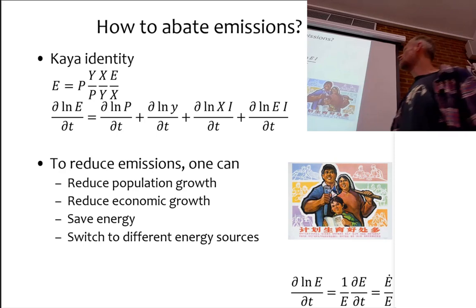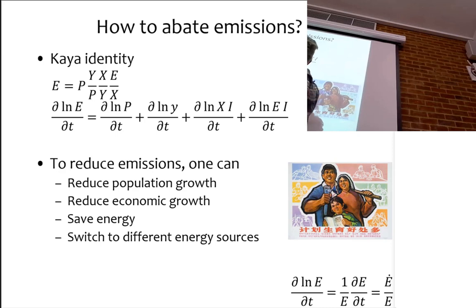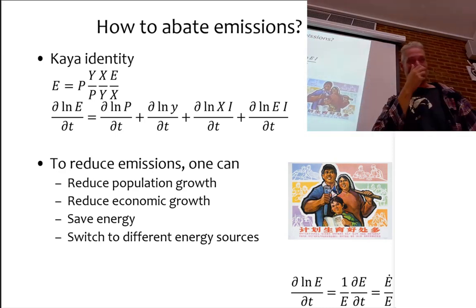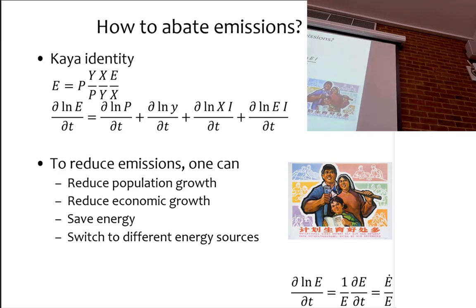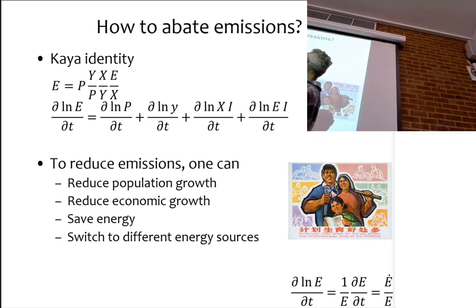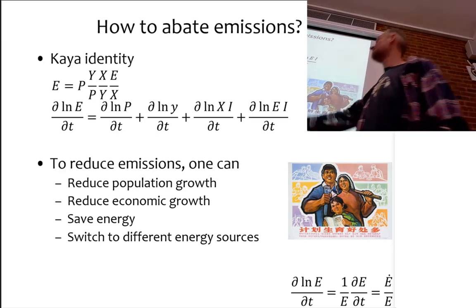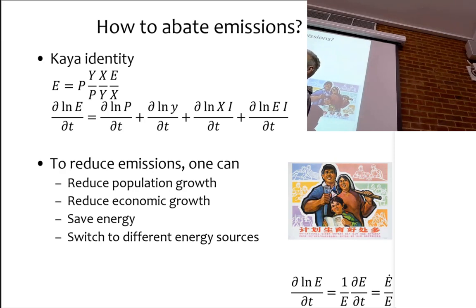A student asks what the 'I' stands for in the energy intensity term. That's just I for intensity. The notation has changed twice — I changed it from last week and it differs from the book. Here I should have X over Y and replace it by XI. The clarification is that this is the growth rate of energy intensity, not the growth rate of energy use.